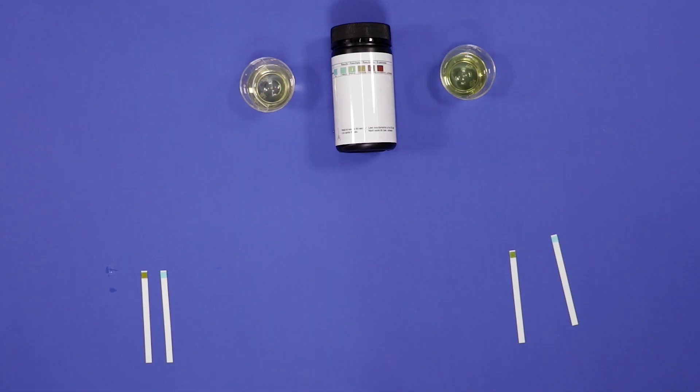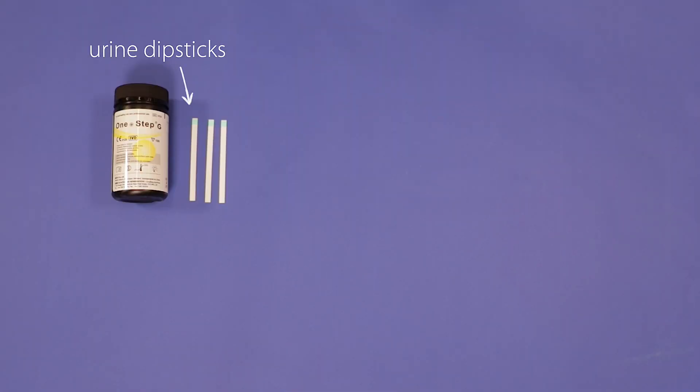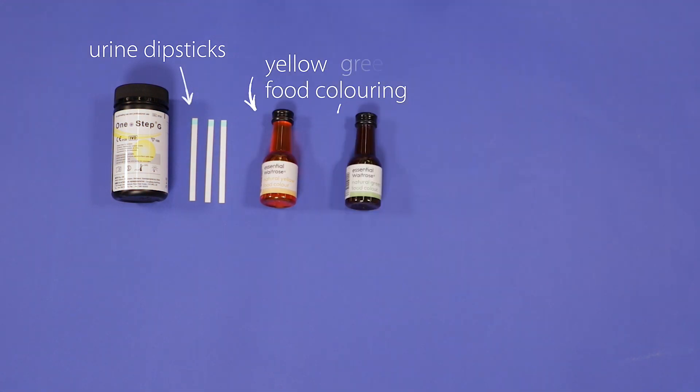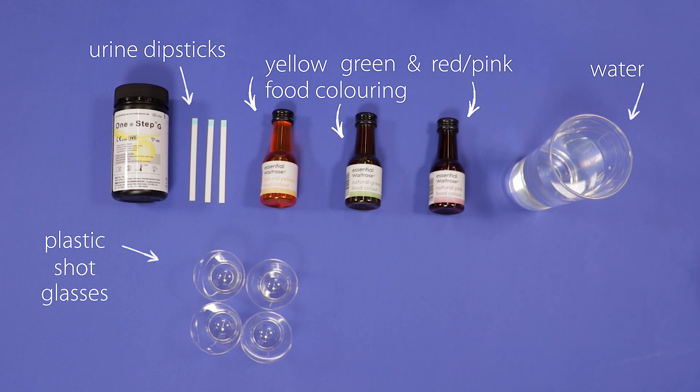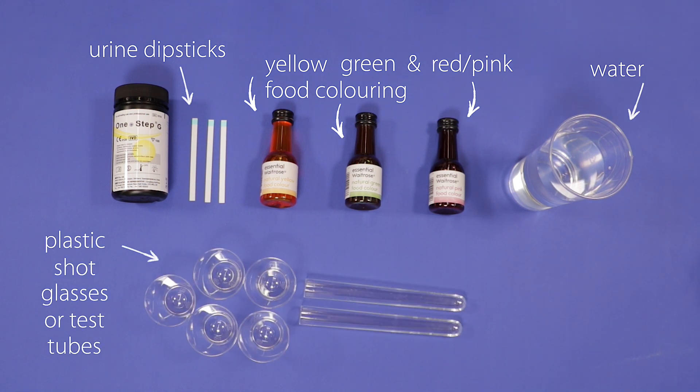For this we will need some urine dipsticks, yellow food colouring, some green and red or pink food colouring, water, a few small plastic shot glasses or test tubes, and powdered glucose made up into a solution with water.